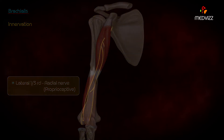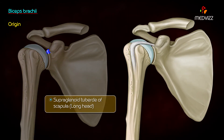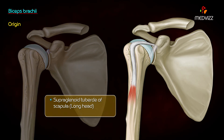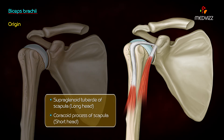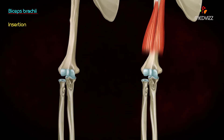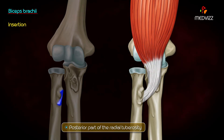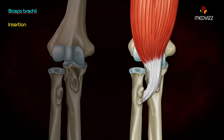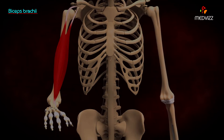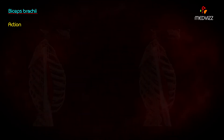Biceps brachii: the long head originates at the supraglenoid tubercle of the scapula, and the short head at the tip of the coracoid process of the scapula. The lower fibers of the muscle form a tendon which passes through the cubital fossa, twists, and inserts into the posterior part of the radial tuberosity. Before it inserts, the medial portion expands medially and downwards to form the bicipital aponeurosis.